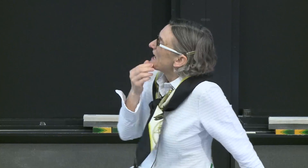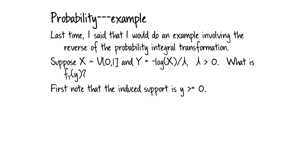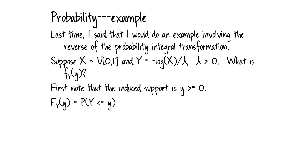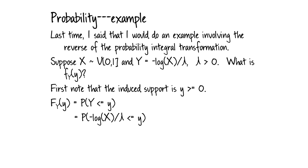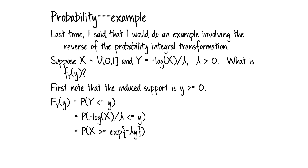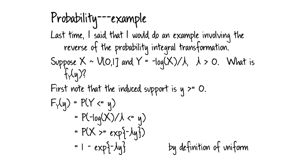The probability at any particular point is equal to zero, so we don't have to worry too much about what happens at any particular point. Now let's go through step-by-step to find the CDF of Y. We start with the definition of the CDF, then plug in negative log of X over lambda into the probability statement and solve for X. Since X has a uniform distribution, we can skip the integration step.